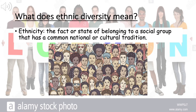So first of all, what does ethnic diversity mean? Ethnicity is the fact or state of belonging to a social group that has a common national or cultural tradition. In basic terms, race describes physical traits whilst ethnicity refers to cultural identification. So race may also be identified as something you inherit, while ethnicity is something you learn.